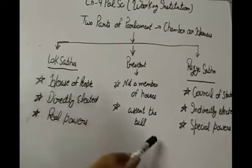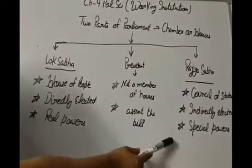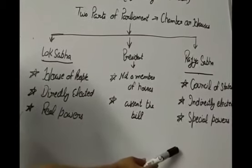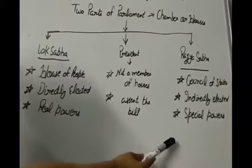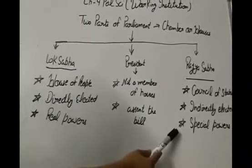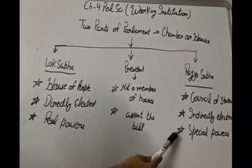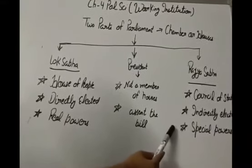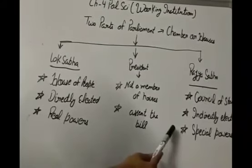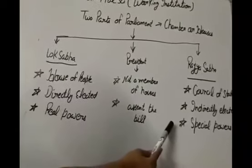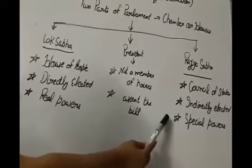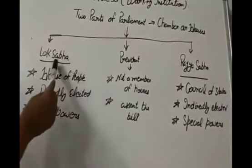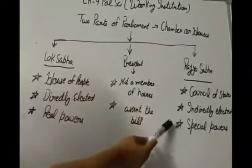But Rajya Sabha has some special powers regarding the states. It looks after the interests of various states reserved for the federal units. According to Article 249, Rajya Sabha can change some subjects of the state list into the union list. And it also has the power to remove the President of the country and the Supreme Court's Chief Justice through the process of impeachment. Now we will discuss in detail the composition of the Lok Sabha and the Rajya Sabha.